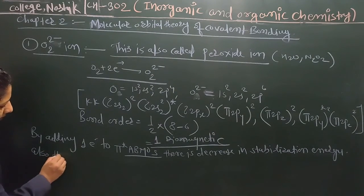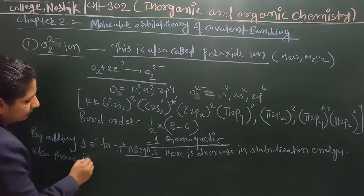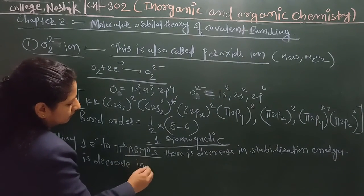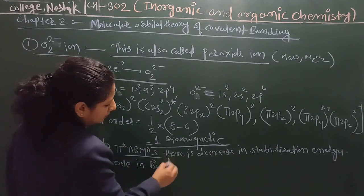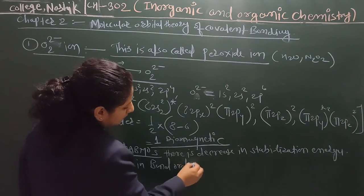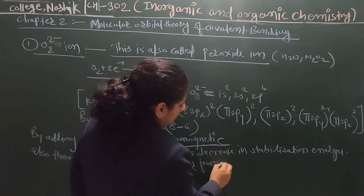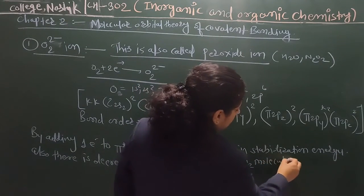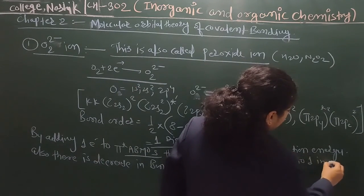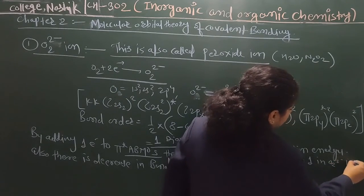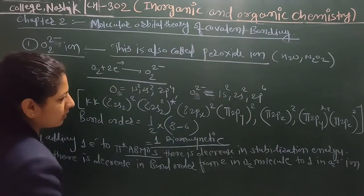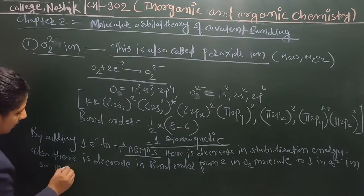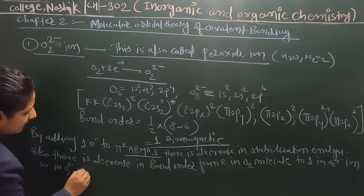There is also a decrease in bond order from 2 in O2 to 1 in O2 2-minus ion. O2 2-minus ion has an increased bond length.